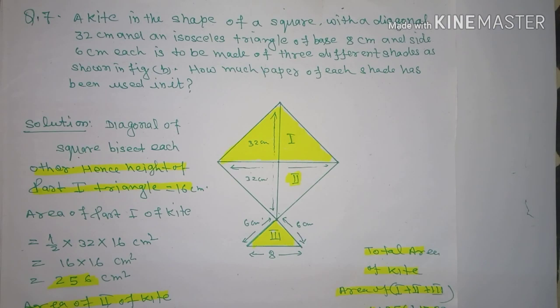A kite in the shape of a square with a diagonal 32 cm and an isosceles triangle of base 8 cm and side 6 cm each is to be made of three different shapes as shown in figure. How much paper of each shape has been used?